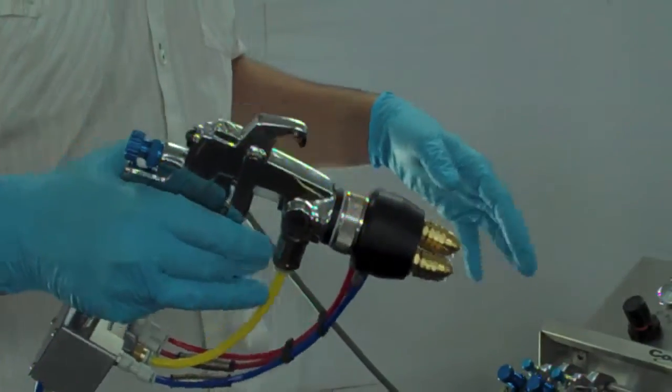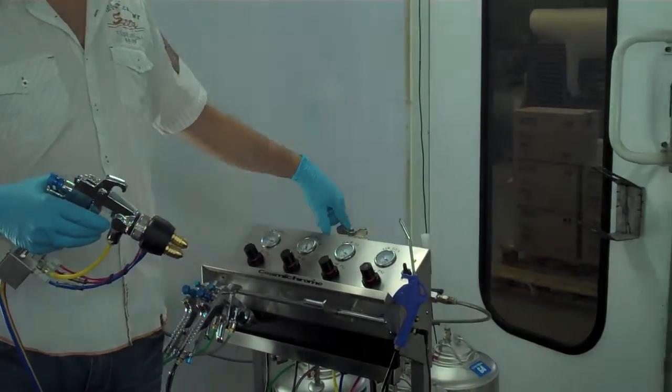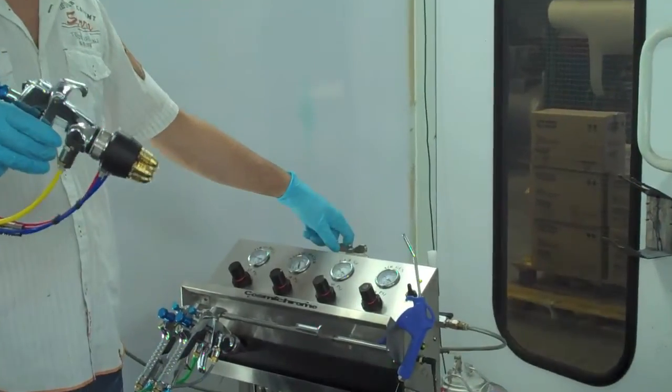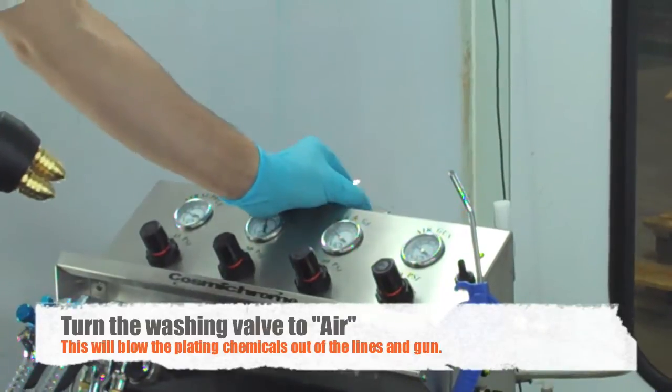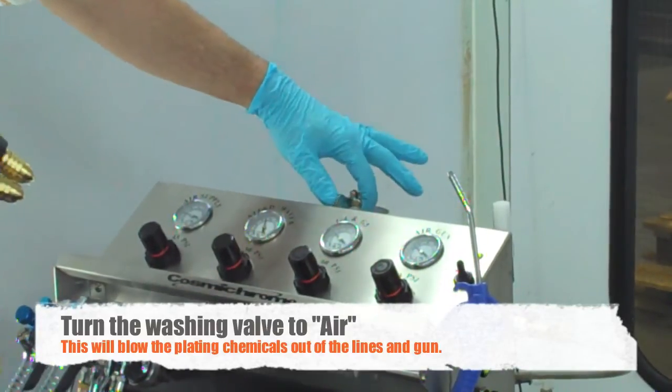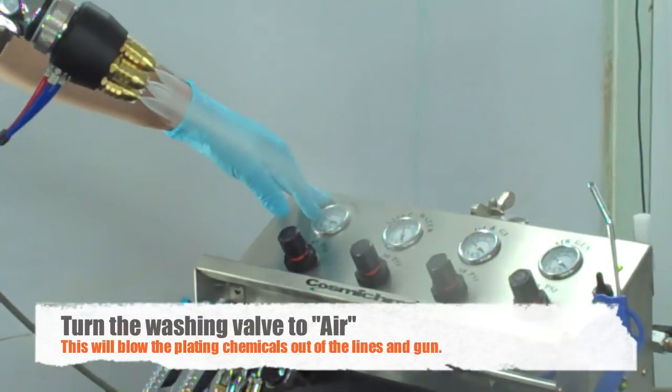So, once you're finished using the gun, you have a dial here. Basically, plating on is what we're doing right now. We're done using the equipment, so you want to clean the E-Gun, return it clockwise to air on. You pull the trigger until all the material comes out.